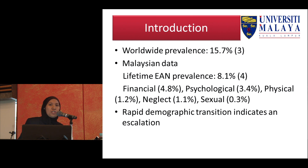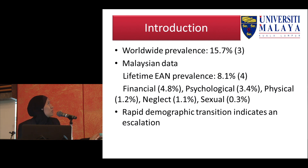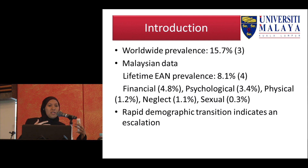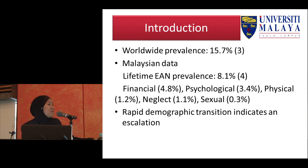The latest systematic review published in the Lancet last year reported the global pooled prevalence of elder abuse at 15.7%. That's a big number. For Malaysian data, we just published a paper and found the lifetime EAN prevalence — any abuse episode occurring when an individual turns 60 — is 8.1%. However, our study included only cognitively intact, healthy, community-dwelling older adults, excluding those with cognitive impairment or serious illness. So this 8.1% is definitely an underestimate, and we believe the actual prevalence in Malaysia is much higher.